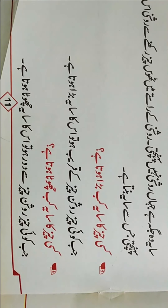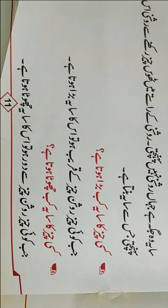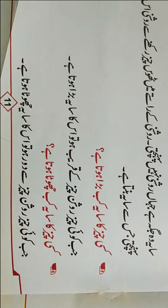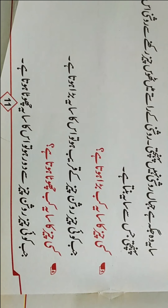Yesterday we had studied that Roshni (light) comes from two kinds of sources: those made by human beings, such as bulbs, lamps, torch, etc., and natural sources such as the sun, light, and stars, etc.